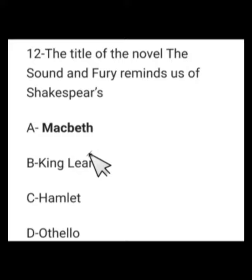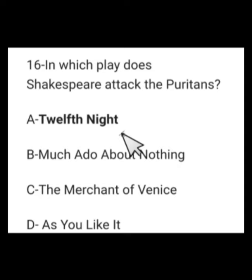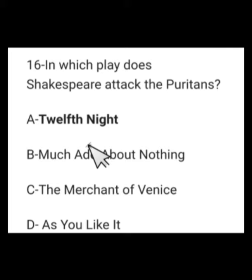Number 13: Who has written 'Tales from Shakespeare'? Options: Charles Lamb, Samuel Rogers, Thomas Love Peacock, or John Clare. This was written by Charles Lamb, option A. Number 14: In which play does Shakespeare attack the Puritans? Options: Twelfth Night, Much Ado About Nothing, The Merchant of Venice, or As You Like It. The answer is option A — Twelfth Night, a romantic comedy written in 1601.